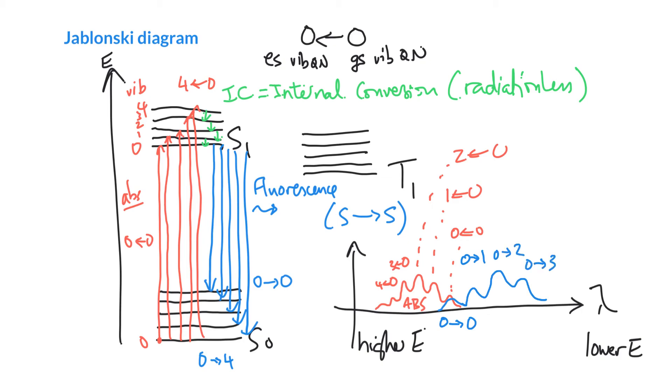So these are our fluorescence here. We've got an overlap at 0, 0 when our absorption and fluorescence is exactly the same energy gap. But absorption is going to be going to higher and higher energies, and fluorescence is going to be to lower and lower energies. So our general spectrum looks something like that.